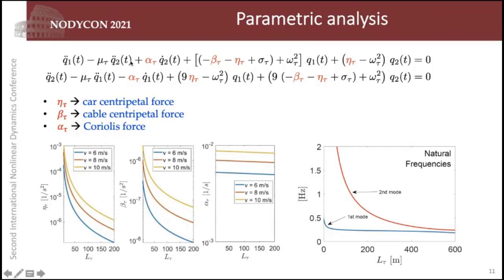In this equation here, the two-mode approximation, I highlighted some parameters in red: eta tau, beta tau, and alpha tau. This tau is to express that these parameters are time dependent, but they change not with the fast time scale, but with the slow time scale. So they change slowly with time. And eta has to do with the car centripetal force, beta has to do with the cable centripetal force, and alpha has to do with the Coriolis force. You can see here that the car centripetal force, as bigger is the cable, as lower is the value of this parameter. And the same for the other centripetal force parameter.